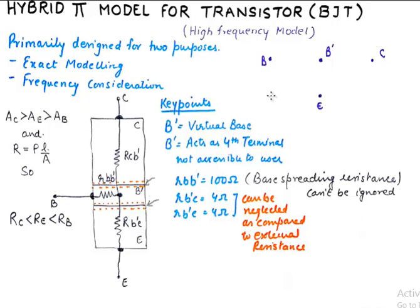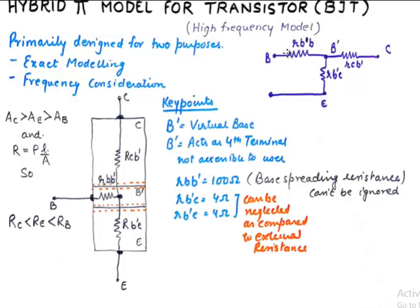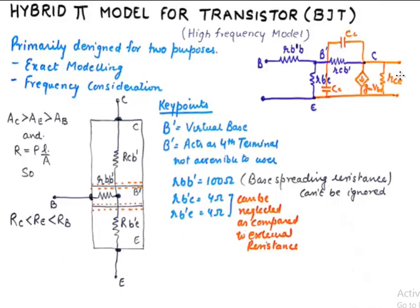Now we have the task of designing the hybrid pi model. We take up all the terminals here B, B dash is the virtual terminal, C and E. From going from B to B dash we find this resistance. So I connect RBB dash from B to B dash and from B dash to E I also find a capacitance that I draw something like this. Going from B dash to E I found this capacitance I label this capacitance as CE and going from B dash to C I find one more capacitance and I label it as CC dash.